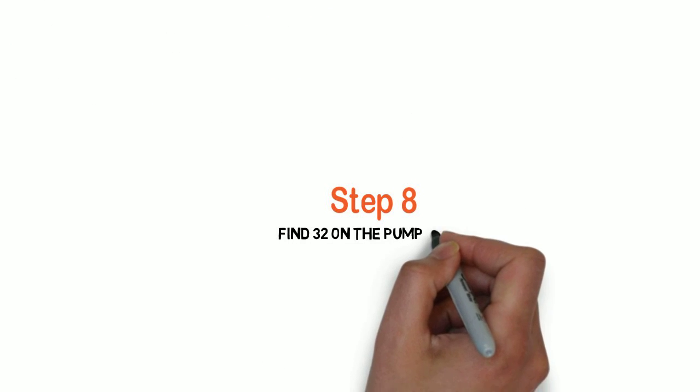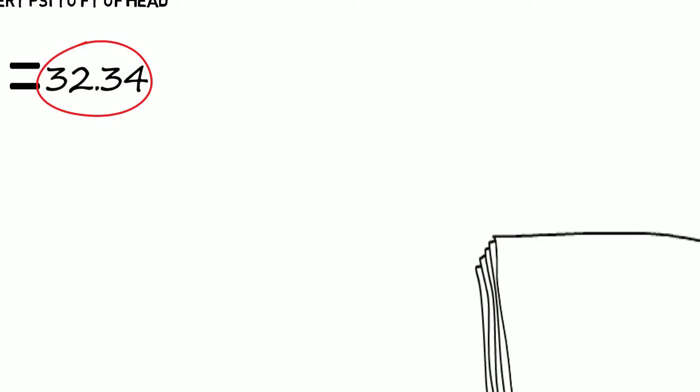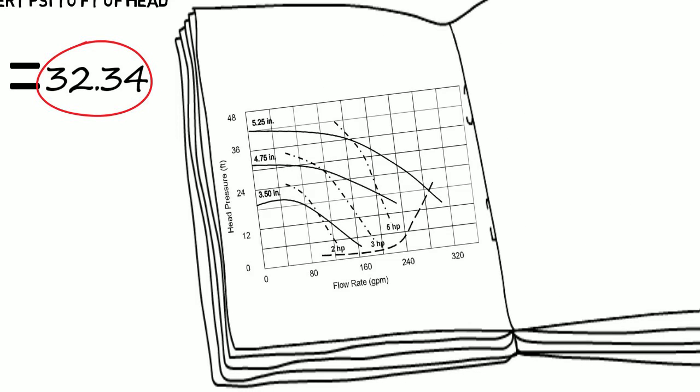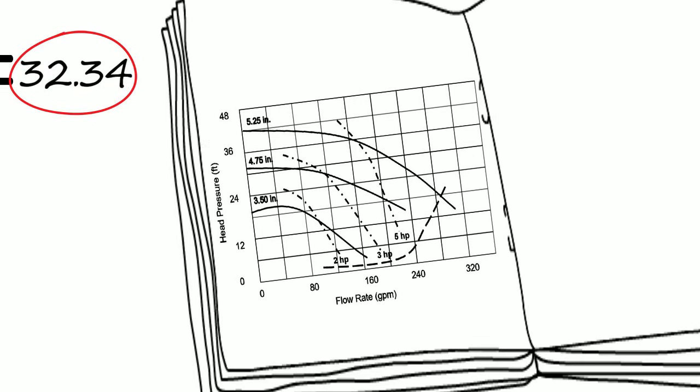Step eight, we're going to find 32 on our pump curve. Here's our pump curve. We find 32 on the left-hand column where it says pressure and feet of head, and it is between 24 and 36. There's the green dot. We draw a line over until it meets our impeller diameter, which was 4.75, and we track down to zero flow. That's perfect because the valve's shut. It's not moving any water. It should be zero flow.